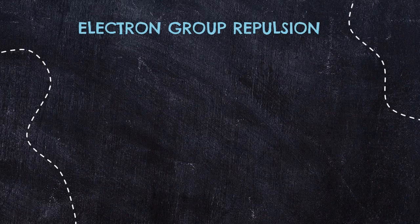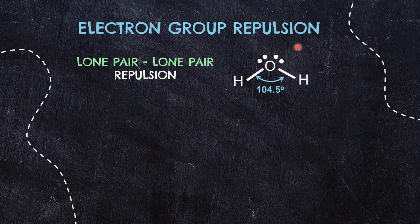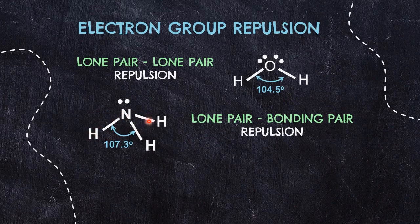Different electron pairs cause different types of repulsion. Using molecules with 4 electron groups — water, ammonia, and methane — as examples: the greatest repulsion is between lone pair and lone pair electrons in water, resulting in the smallest bond angle of 104.5°. Next is repulsion between lone pair and bonding pair electrons in ammonia, giving 107.3°. The weakest repulsion is between bonding pair and bonding pair electrons in methane, giving the largest bond angle of 109.5°.